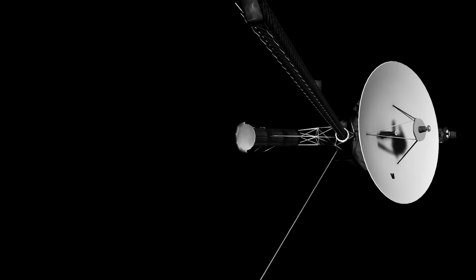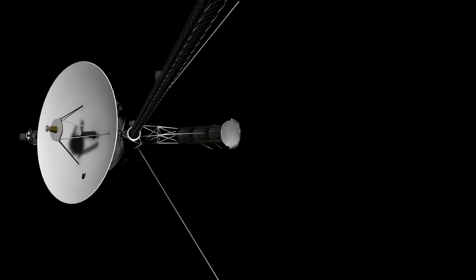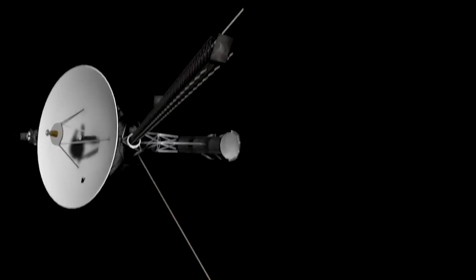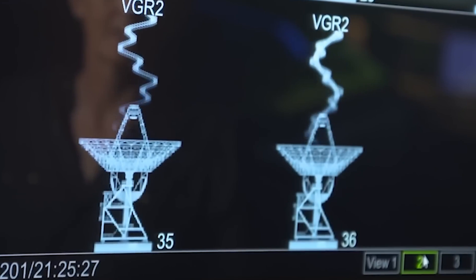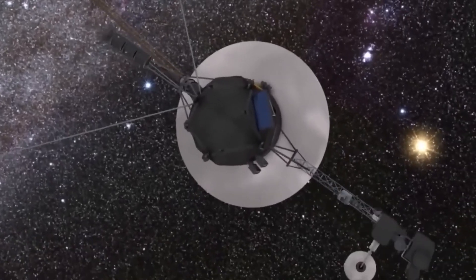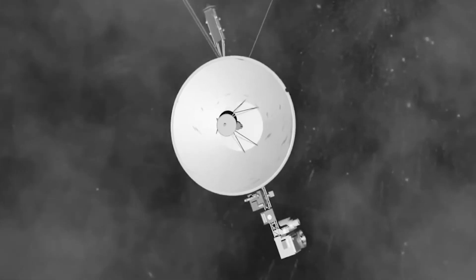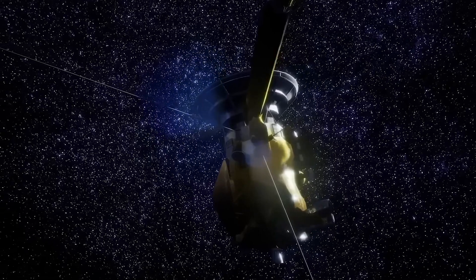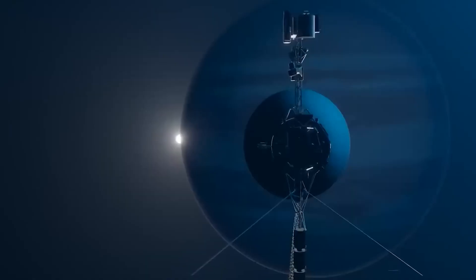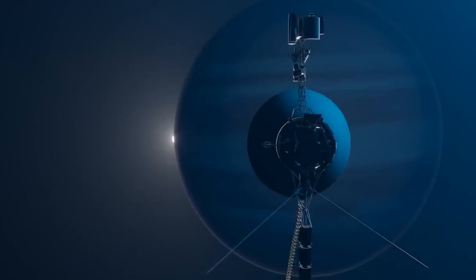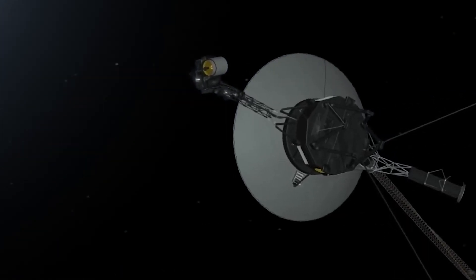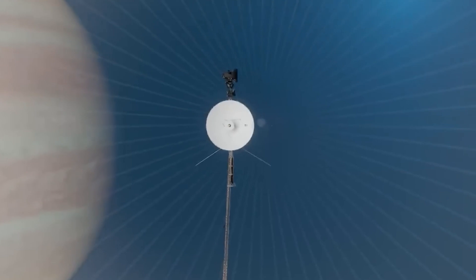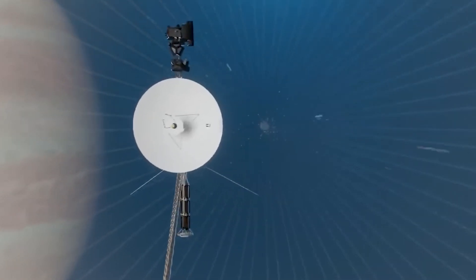Engineers acted quickly and sent a command to Voyager 1 instructing the AACS system to shift to the correct computer to transmit the telemetry data. Although the solution was low risk, it required a great deal of patience because of the significant delay caused by the distance between Earth and Voyager 1. Radio signals take nearly 22 hours to travel back and forth, so the troubleshooting process required careful coordination.